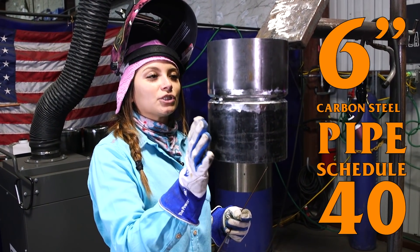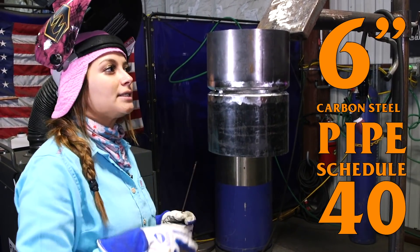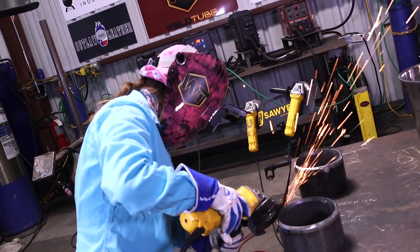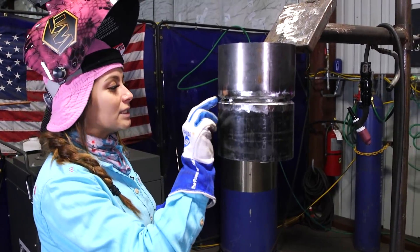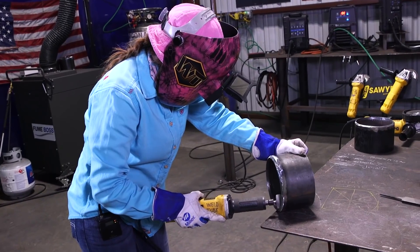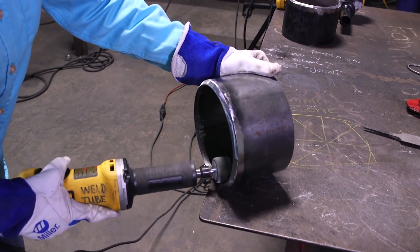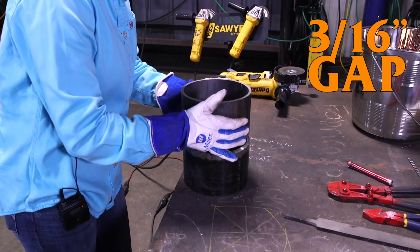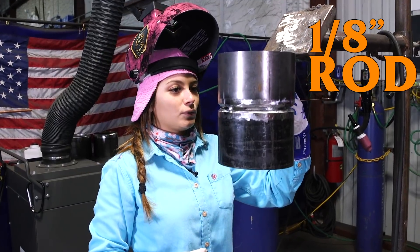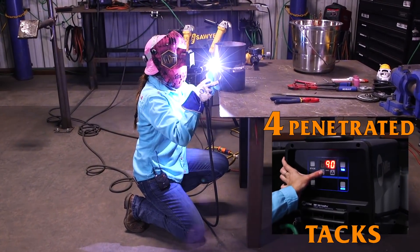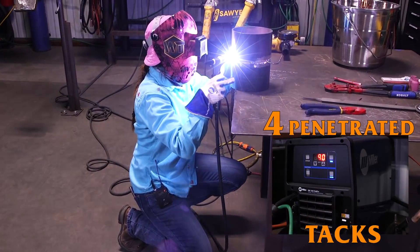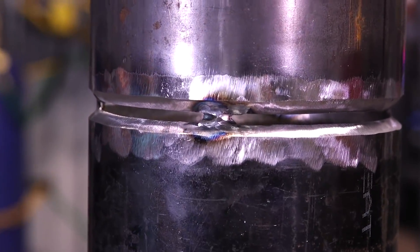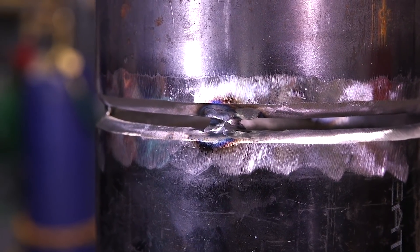As you can see, I have my 6-inch carbon steel schedule 40 tacked up in a 2G position. I made sure to clean an inch away from the bevel on both sides. My bevel is nicely cleaned. Also in the inside, I have it all cleaned up about an inch away from the bevel as well. I did a 3/16 gap so that my 1/8 rod can go in nice and smooth. I also made sure to feather down my tacks. You want to make sure you can see the little blue spots so that whenever you do your tie-ins, they tie in real nice and smooth.